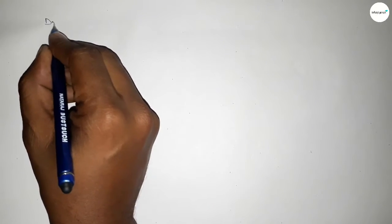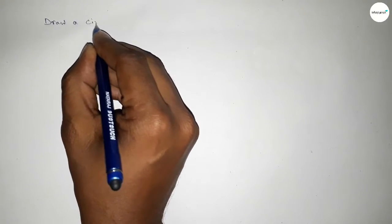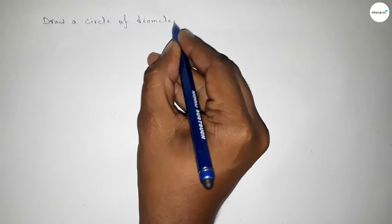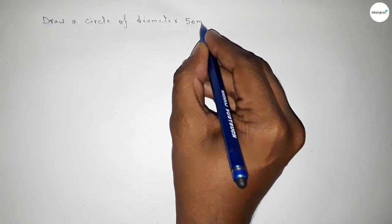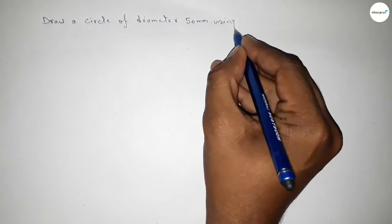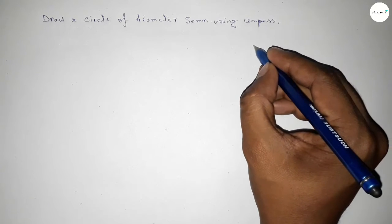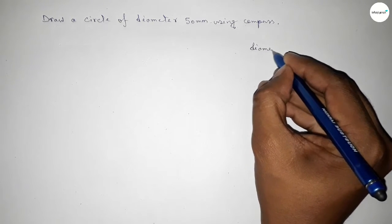Hi everyone, welcome to Essay Share Classes. Today in this video we have to draw a circle of diameter 50 millimeters using a compass in an easy way. So let's start the video. First of all, the diameter equals 50 millimeters.